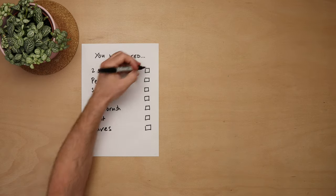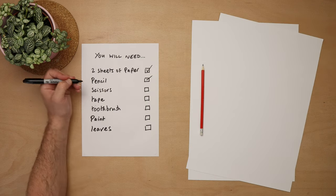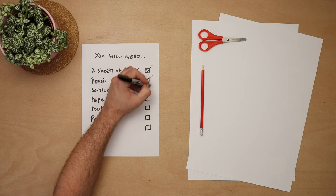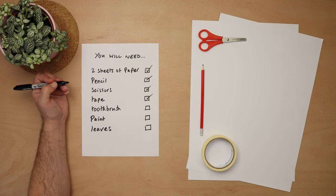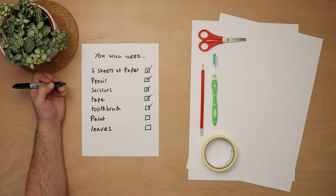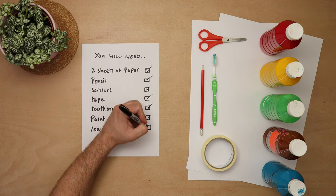Right you're going to need two sheets of paper, I'm using A3 but A4 is fine, a pencil, some scissors, some tape, an old toothbrush, some paint and I'm using poster paint in autumnal colors and you'll need some leaves.